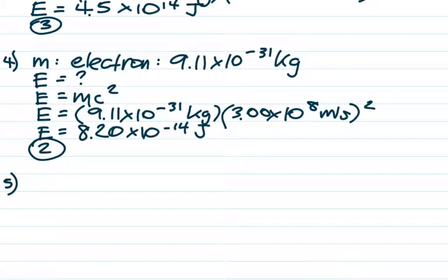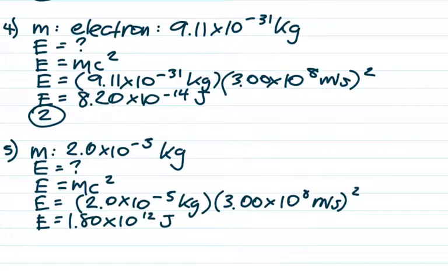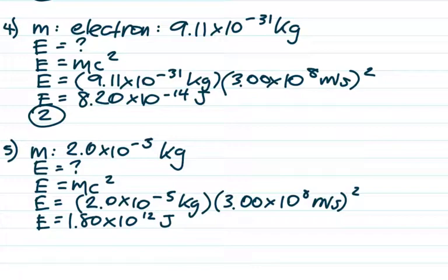Number 5 is another E equals mc squared problem, kind of like number 2. But take a look at the answer choices — they actually use prefixes in front of the joules. E equals mc squared gives us 1.8 times 10 to the 12 joules. I see 1.8 listed twice: choice 1 is 1.8 terajoules and choice 3 is 1.8 megajoules. The front page of the reference table shows that tera is 10 to the 12 and mega is 10 to the 6. We said 1.8 times 10 to the 12 joules, so it's choice 1.